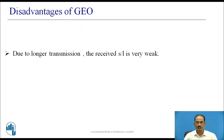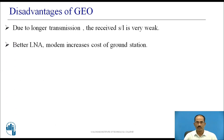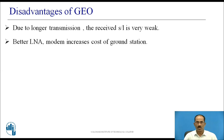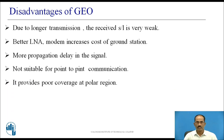Disadvantages of GEO: The signal requires considerable time to travel from earth station to satellite and vice versa. Due to this, the received signal is very weak. Better low noise amplifier and modem is required for the ground station, which increases the cost of ground station equipment. Due to longer transmission, the signal introduces more propagation delay in the network. Geosatellites are not suitable for point-to-point communication, and provide poor coverage at polar regions.